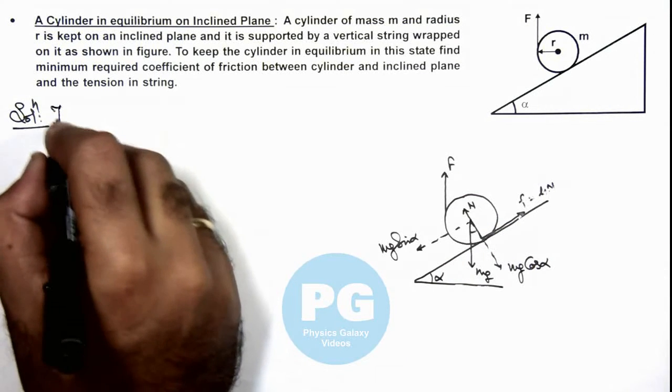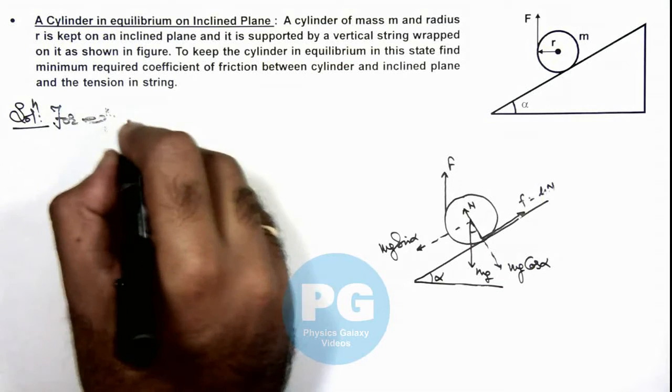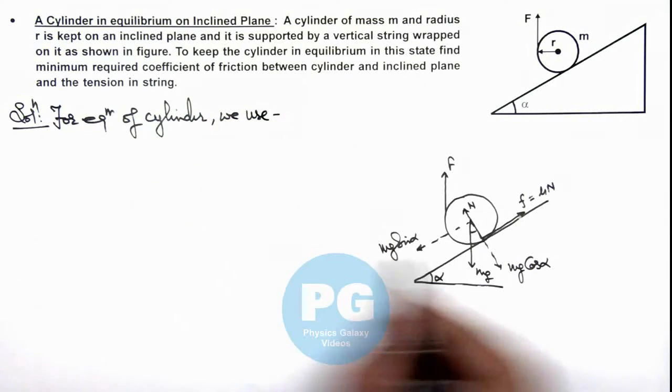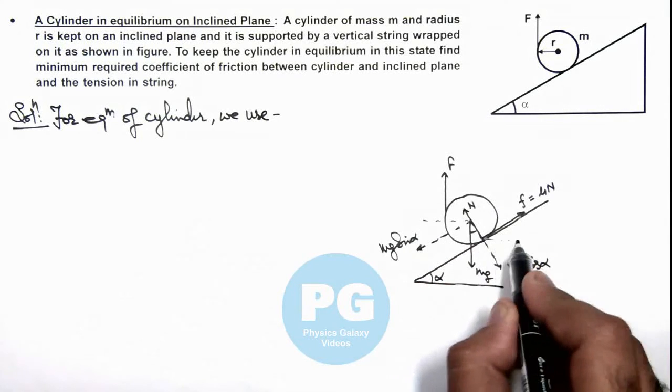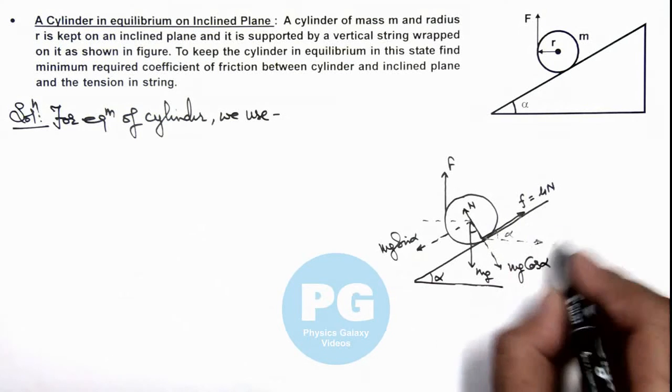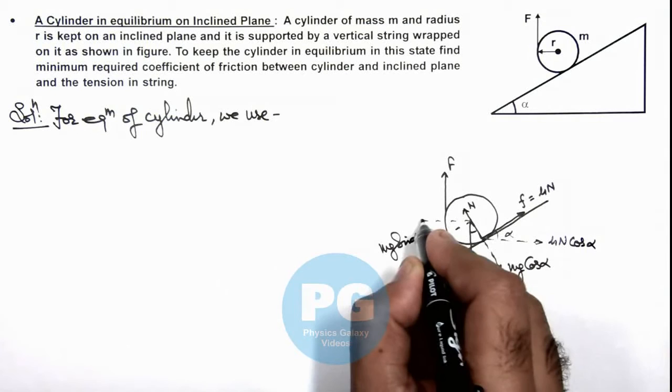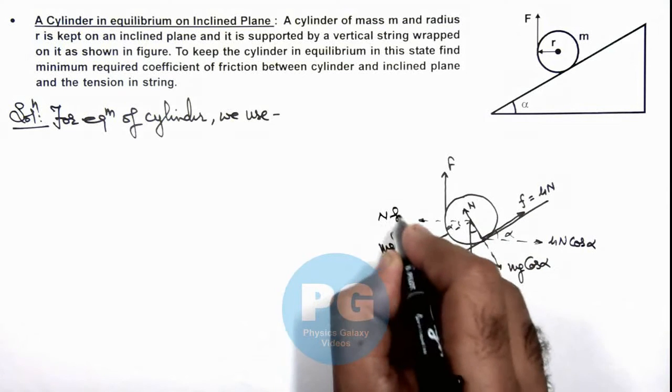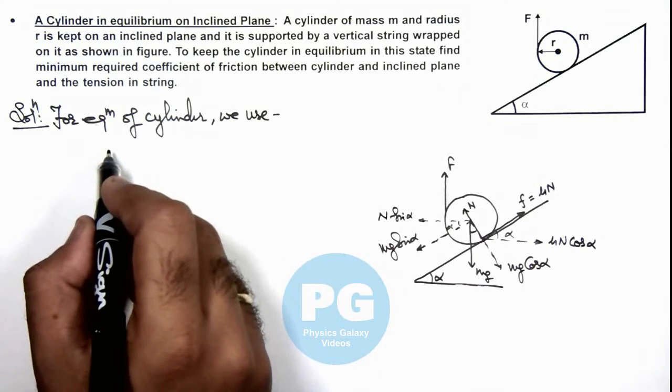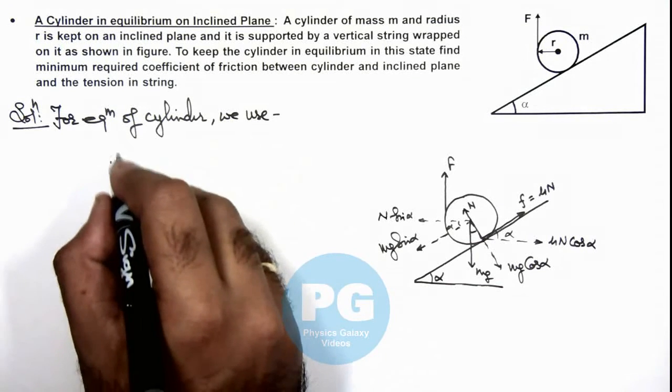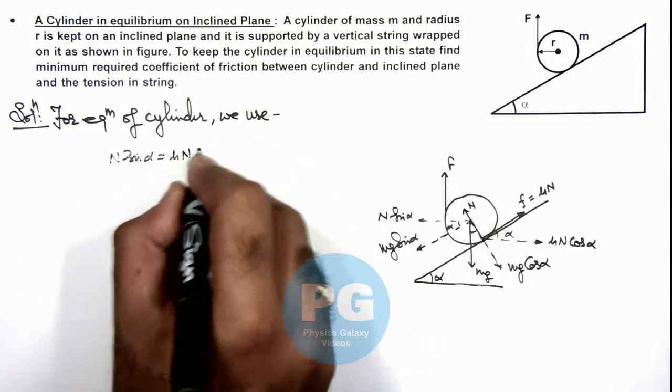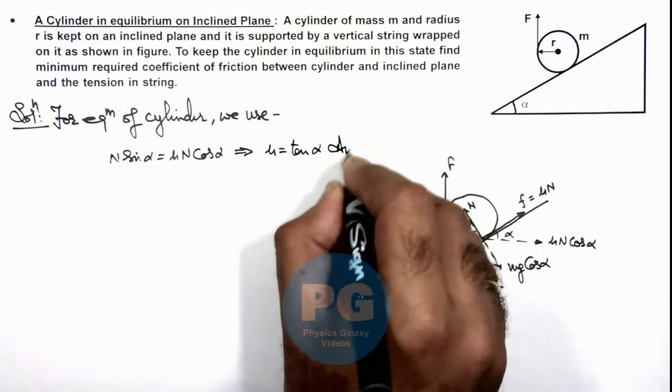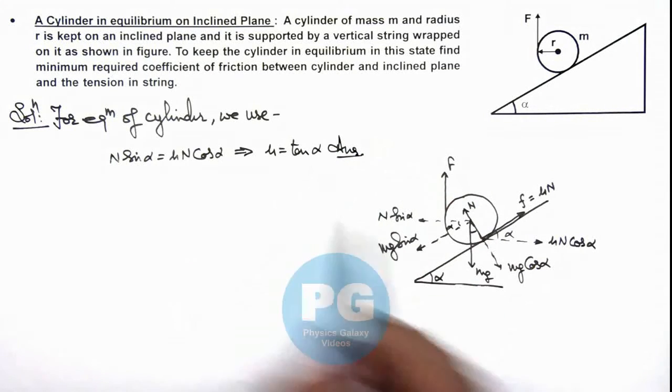Now in this situation, for equilibrium of cylinder, we can write in horizontal direction: horizontally, the component of friction is μN cos alpha, and to the left side the component of N will be N sine alpha. So for equilibrium of cylinder we can write N sine alpha is equal to μN cos alpha, which gives us the value of μ, that is tan alpha. So that is one result of the problem: the minimum coefficient of friction required to keep the cylinder at rest.